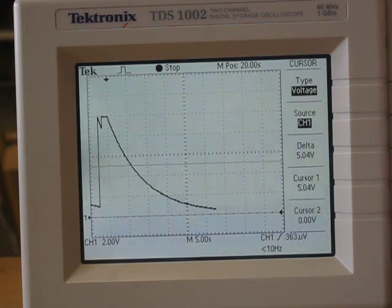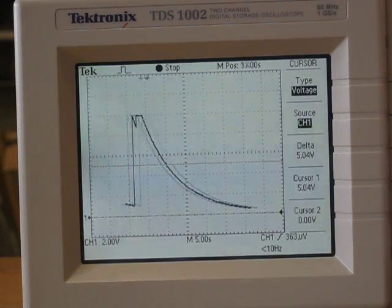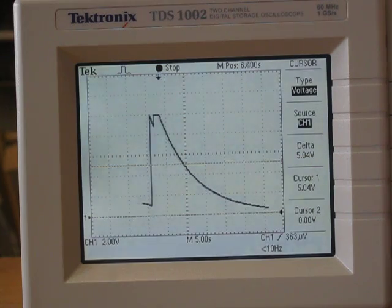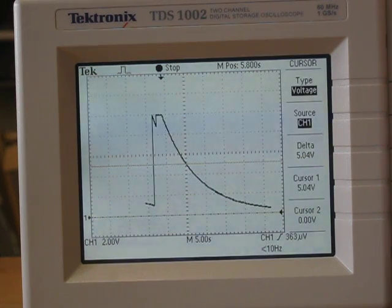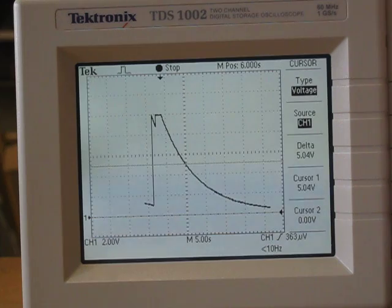And then I can just use the horizontal position knob and find the time of that intersection. And that shows it as 6.0 seconds.